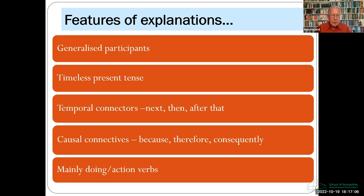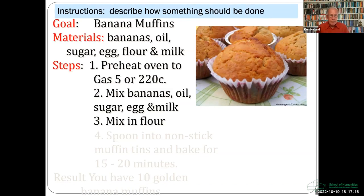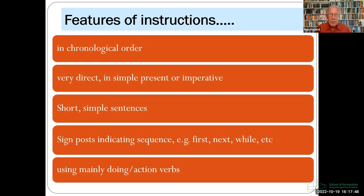Instructions, on the other hand, are written to describe how something should be done. They usually consist of a statement about what's to be achieved — for example, how to make banana muffins — then a list of materials and equipment needed, a series of sequential steps towards the goal, and diagrams or illustrations. I should warn you not to make notes of this recipe; it's not an authentic text — I made it up and I don't know anything about cooking. But instructions do look like this: written in chronological order, very direct, simple present or imperative, focusing on general human groups rather than individuals, short simple sentences, a lot of signposting words to indicate sequence, and action verbs.